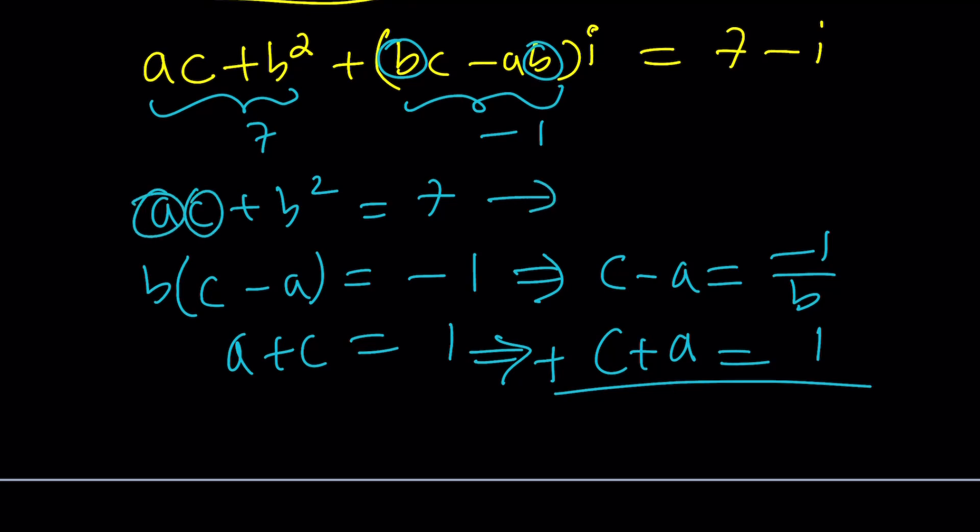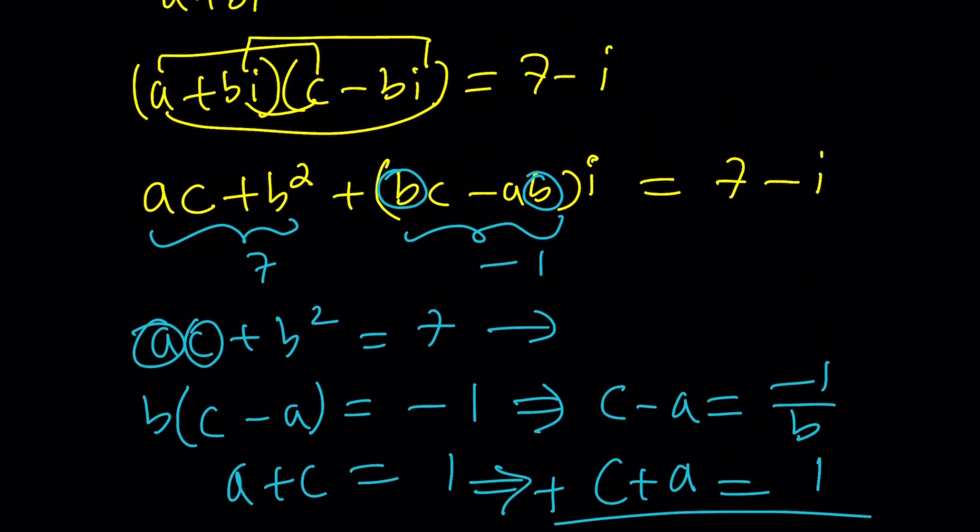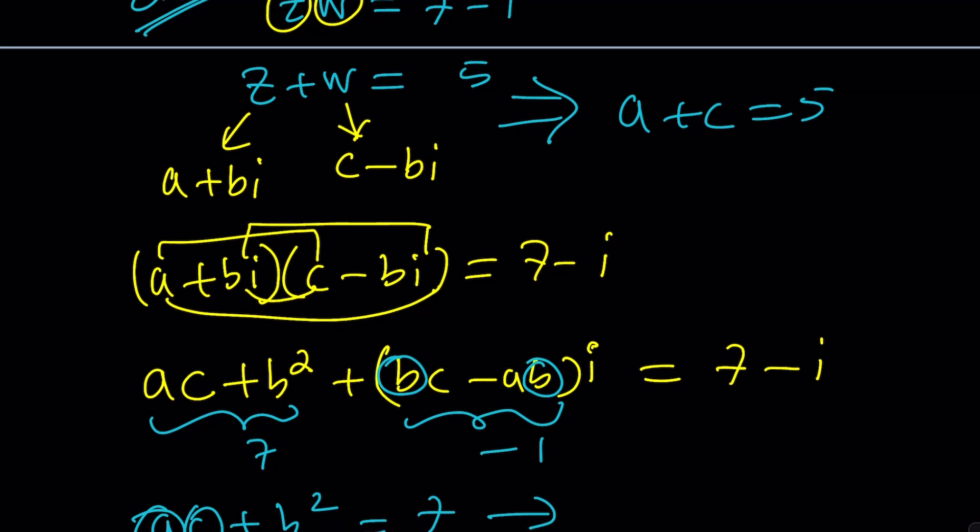That should probably give us a quadratic or cubic or some rational function or something like that. I don't know. Then we can hopefully solve for A, B, C, and then we can just plug it in. Remember, our goal was to solve for Z and W. Once we find A, B, C, we got Z and W.